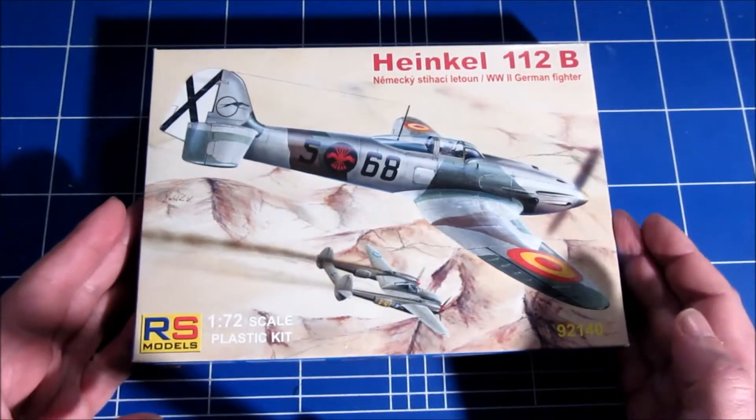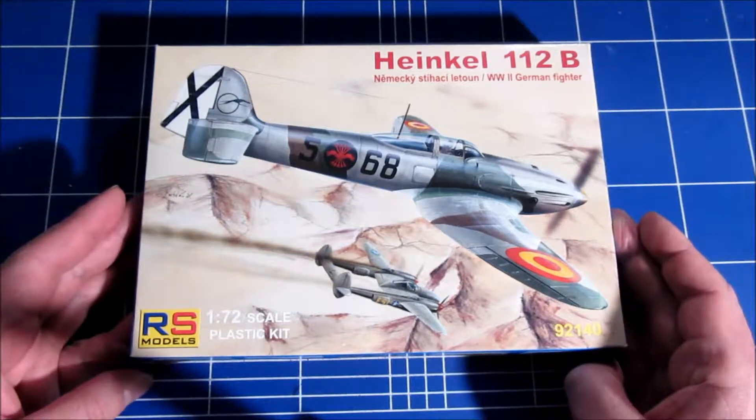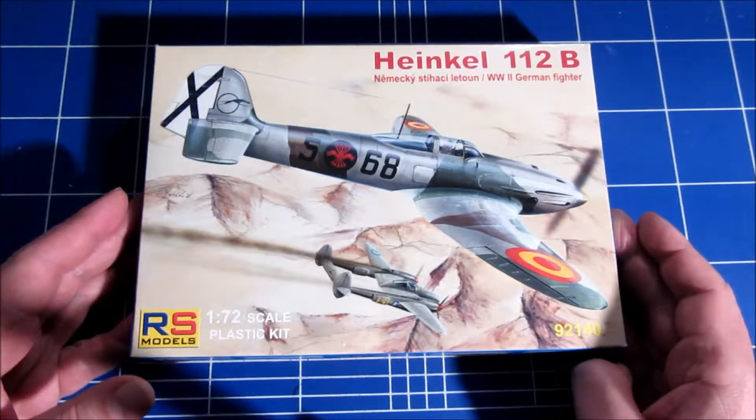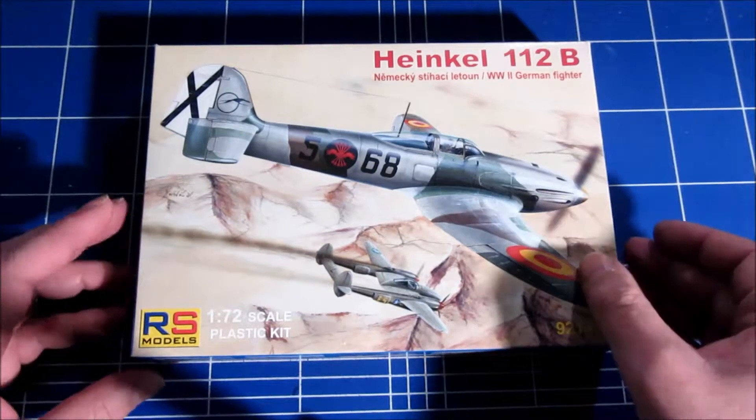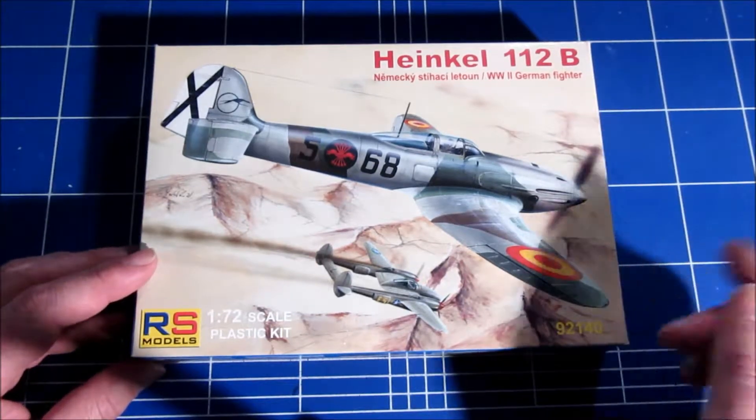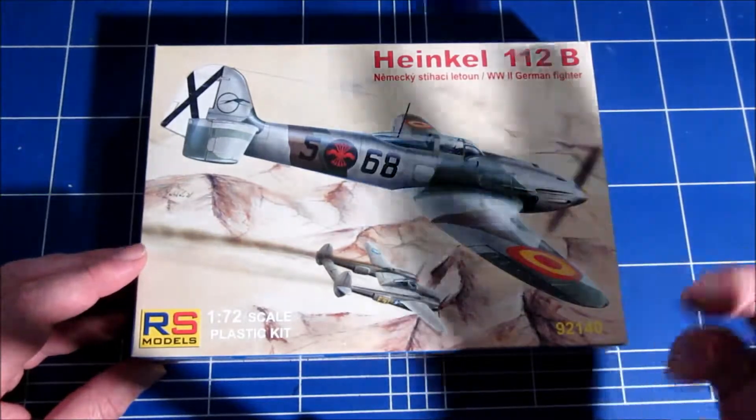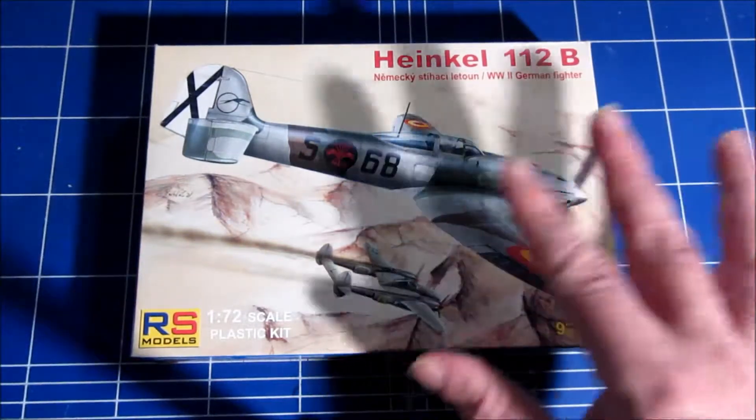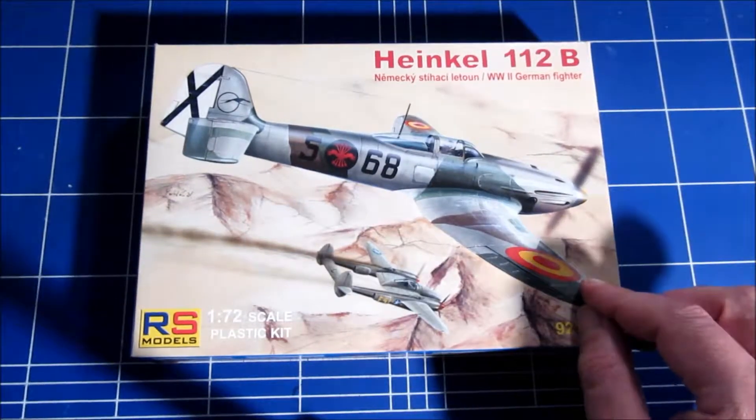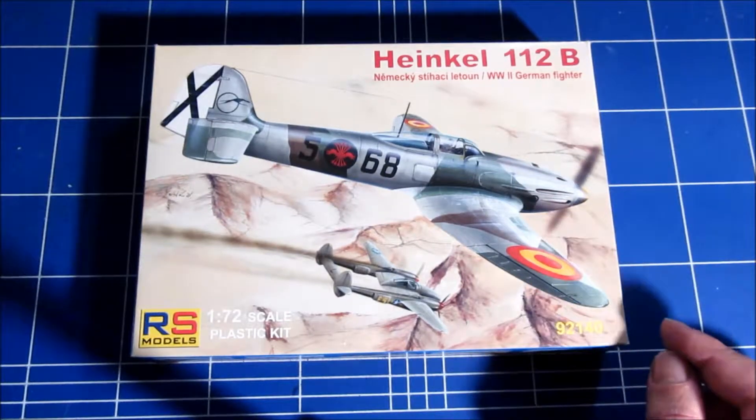This is the Heinkel 112B from RS models. There are several different boxings. This is the one with the Spanish vehicles. There is also a boxing with Romanian decals, Hungarian decals. But basically inside it is the same kit. So let's have a quick look.